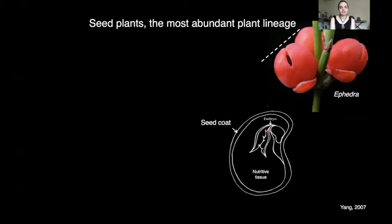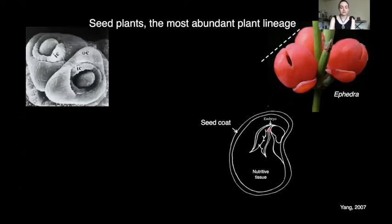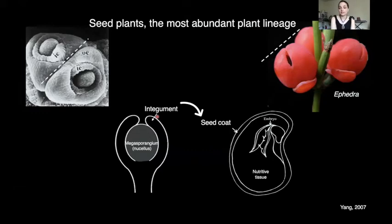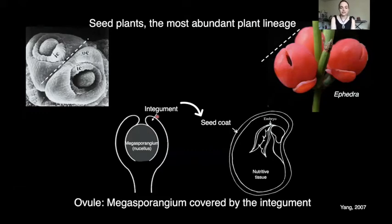The seed is just a mature stage of the ovule. When the ovule gets fertilized, it becomes the seed. If we make a longitudinal section through that ovule, we would see the megasporangium or nucellus covered by the integument. The integument will undergo a series of ontogenetic transformations becoming the seed coat. The ovule is defined as a megasporangium covered by the integument.